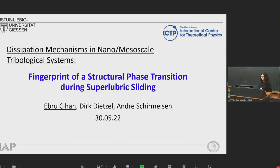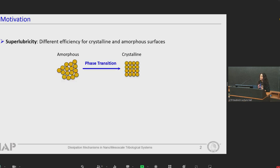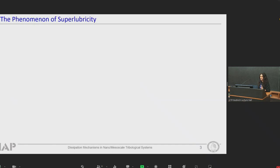The title of this talk will be 'Fingerprint of a Structural Phase Transition During Superlubric Sliding.' The main motivation will be superlubricity. I will first discuss the different efficiency of superlubricity for crystalline and amorphous structures by showing a direct phase transition from an amorphous to a crystalline structure. And secondly, I will briefly touch on the effect of thermal relaxations on sliding friction.